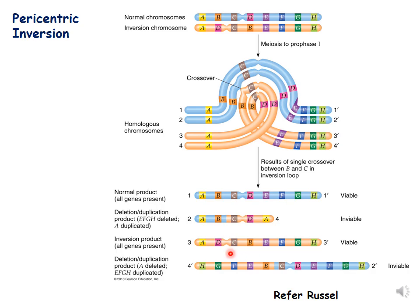The third product is the inverted product — it has all the genes but they are not in the correct order. It will be viable because of the presence of all the genes A, B, C, D, E, F, G, H. The fourth product is showing duplication as well as deletion: there is duplication of H, G, F, and E genes, then B, C, and D genes, but there is absence of the A gene, so this will also be inviable.